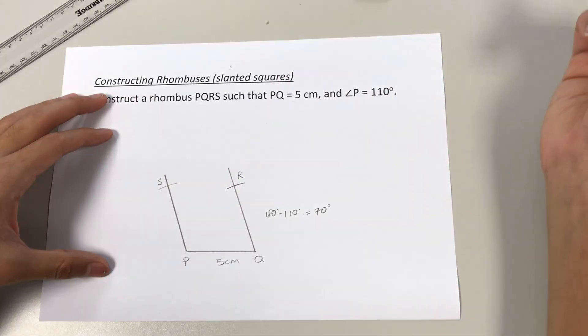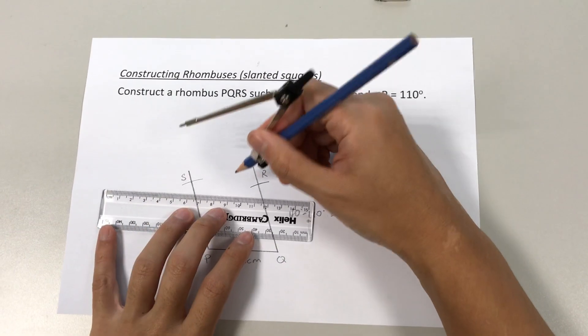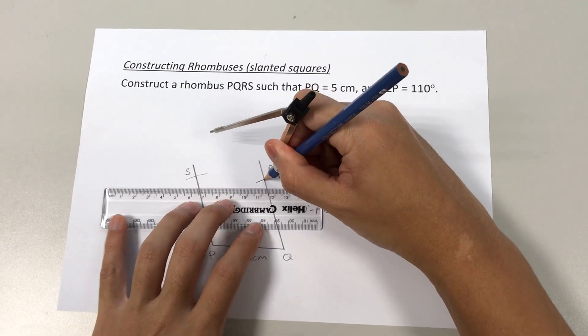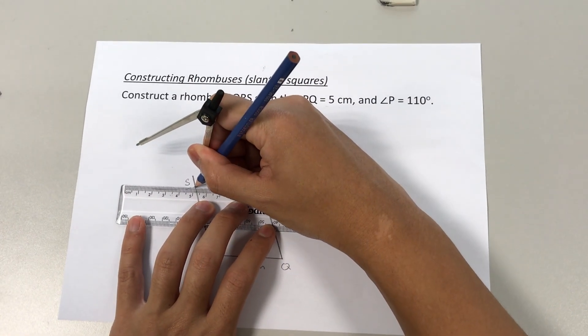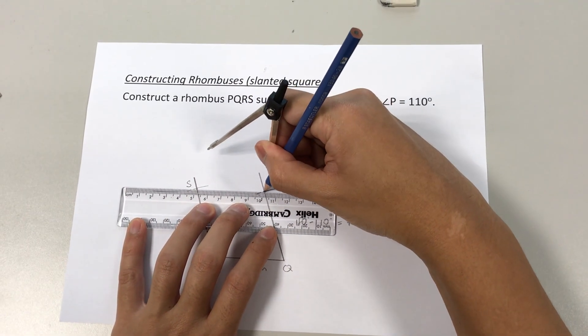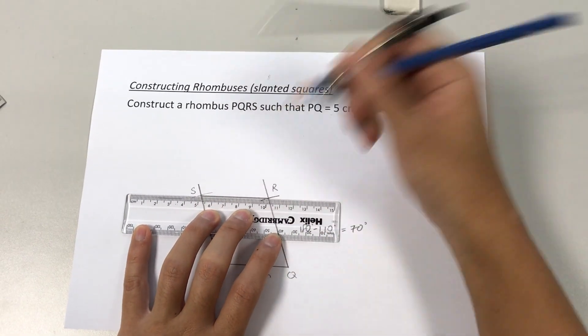Okay, this is not a rhombus yet. In order to make it a rhombus, we need to close it up. So the intersection here at point R will meet the intersection here at point S. And we join it.